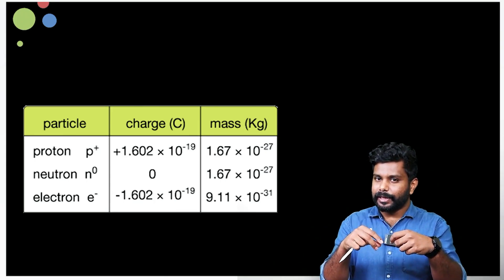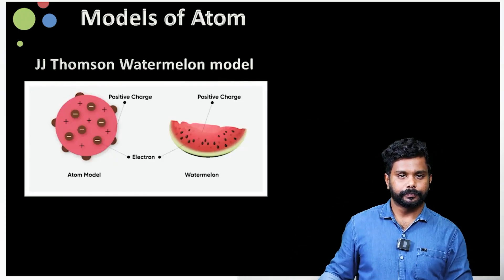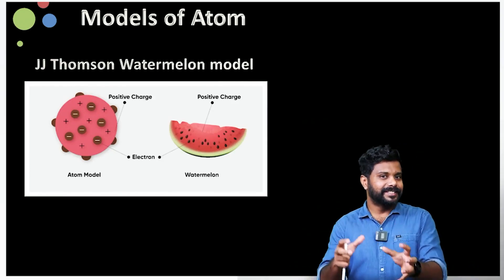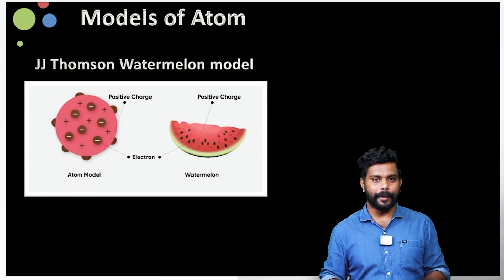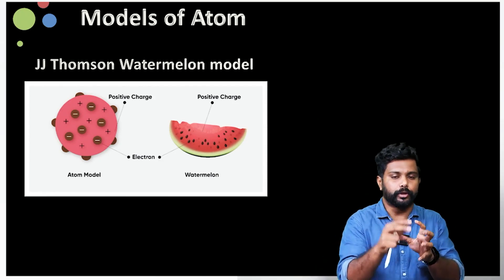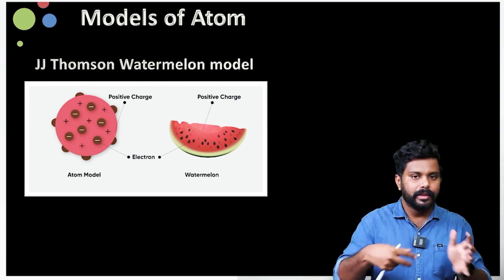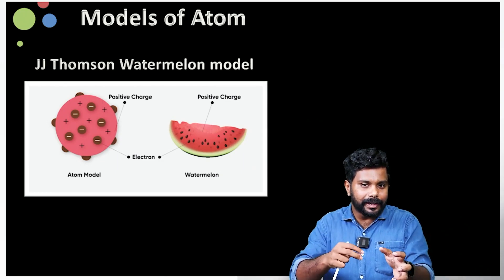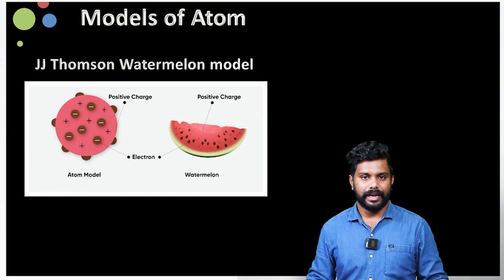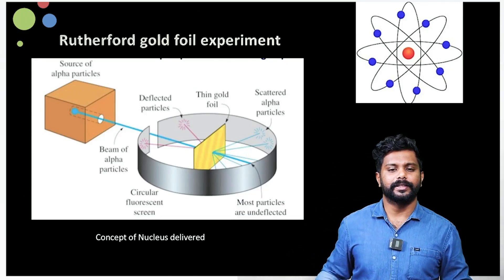After knowing about subatomic particles, many people proposed models of the atom. The first is J.J. Thomson's model — it is very famous and is called the watermelon model. He considered the atom as a red sphere like a watermelon, where the red color represents the positive charge and the seeds represent the electrons. He mentioned that electrons are embedded in the positive sphere, which could explain the neutrality of the atom.